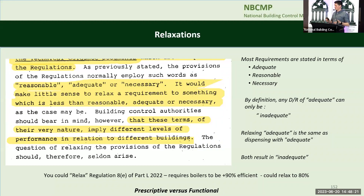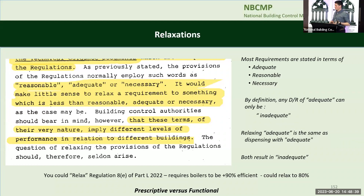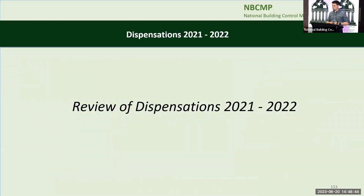There are certain regulations where relaxation might make sense. For example, Regulation 8 of Part L 2022 requires new boilers to be 90% efficient — you could relax that to maybe 80% because it's written as a prescriptive regulation as opposed to a non-prescriptive one where the terms are adequate, reasonable, or necessary. But the majority of our regulations are functional and non-prescriptive.